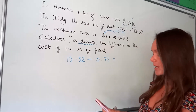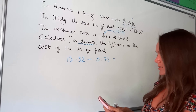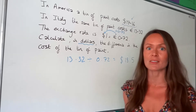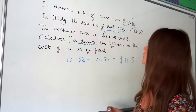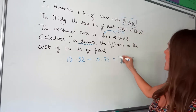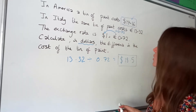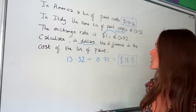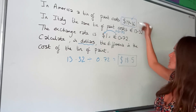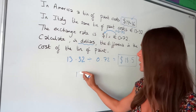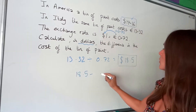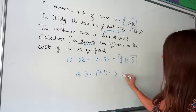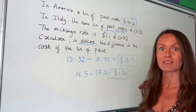Put that in your calculator and you get 18.50. Remember that's now in dollars. So we have both tins of paint in dollars: the one in America is $17.16 and the one in Italy is $18.50, which is actually more expensive. All that's left is to find the difference, which is just subtracting: 18.50 minus 17.16 gives a final answer of $1.34.